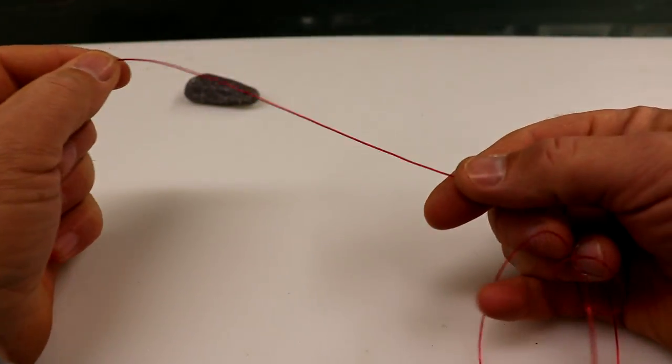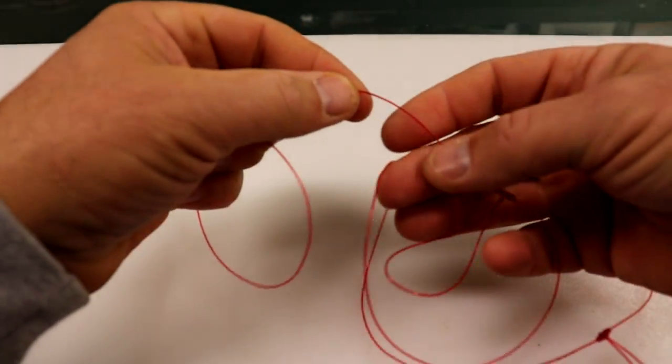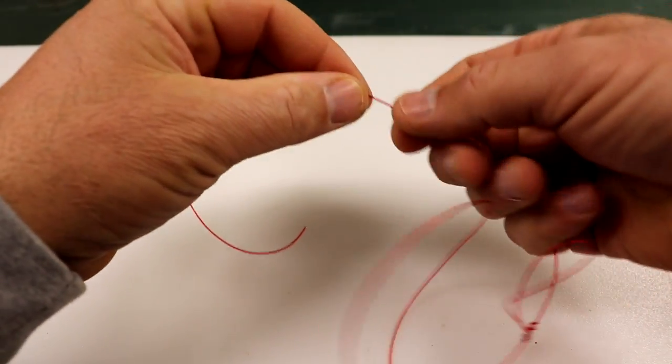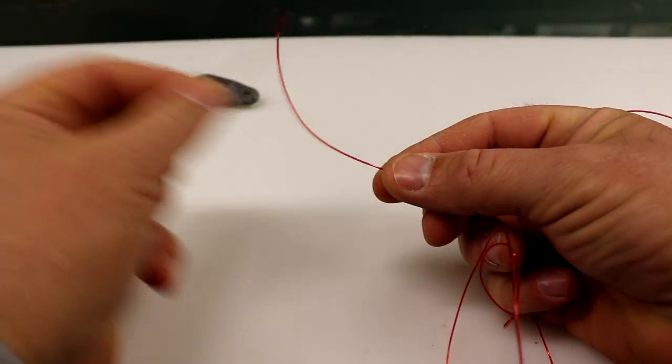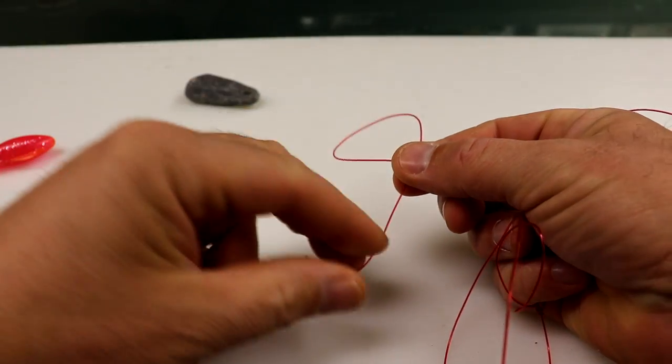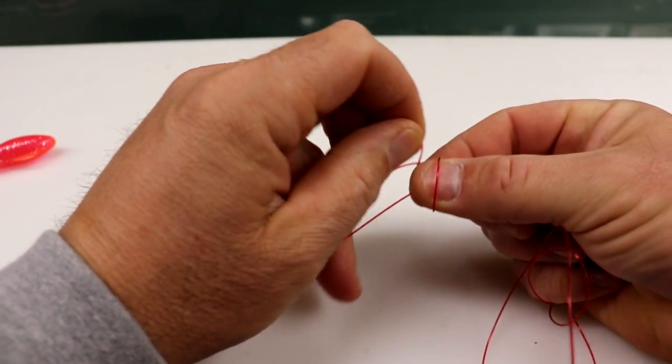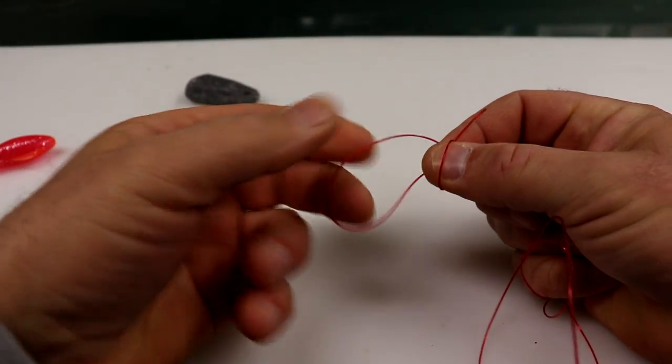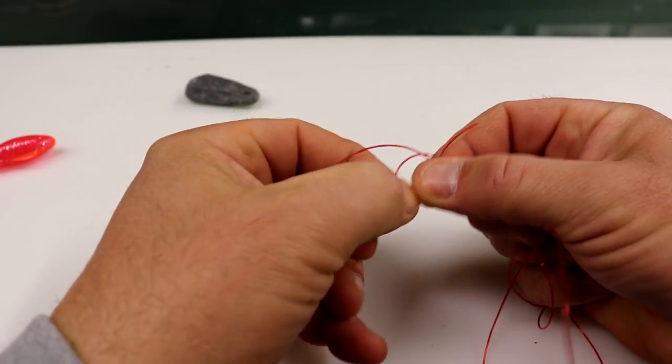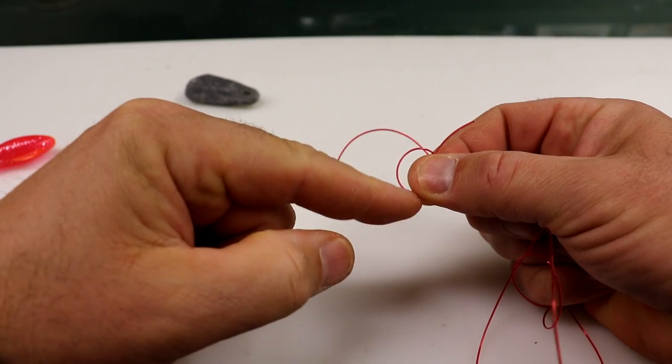Now we're going to do a perfection loop and that's where your sinker is going to go. Your perfection loop is simple - twist it over one time over the thumb, one time under the thumb so it looks like that.